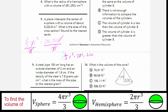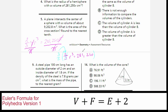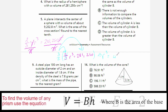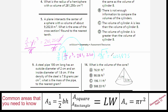Now we isolate the variable: multiply by the reciprocal of two-thirds. These cancel, and then three times 281,250 divided by two leaves r cubed on the left and 421,875 on the right. Since this ends in five, I know taking the cube root gives a number ending in five. Taking the cube root of both sides gives r equals 75.